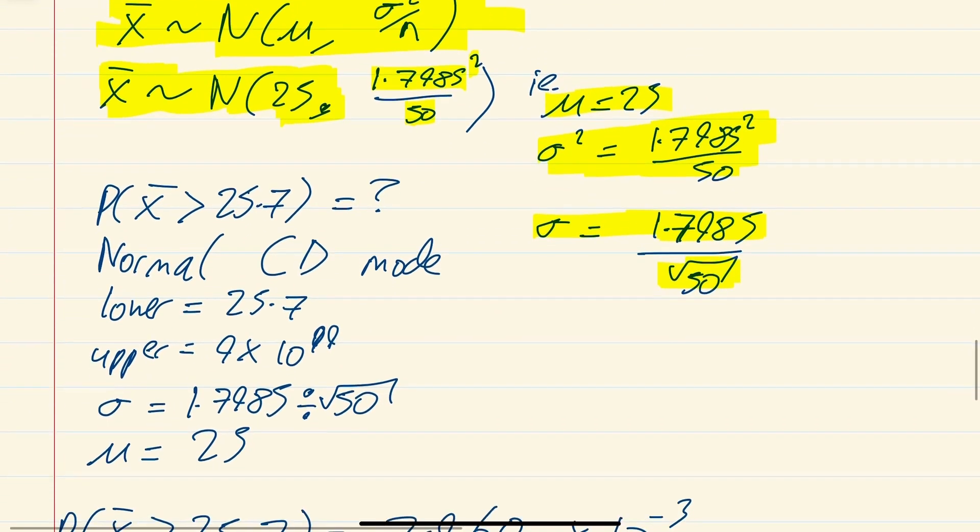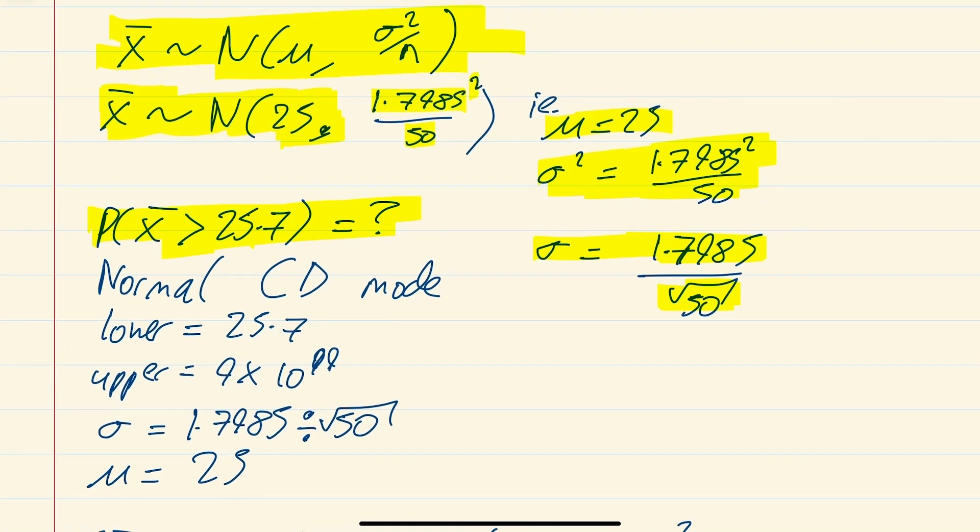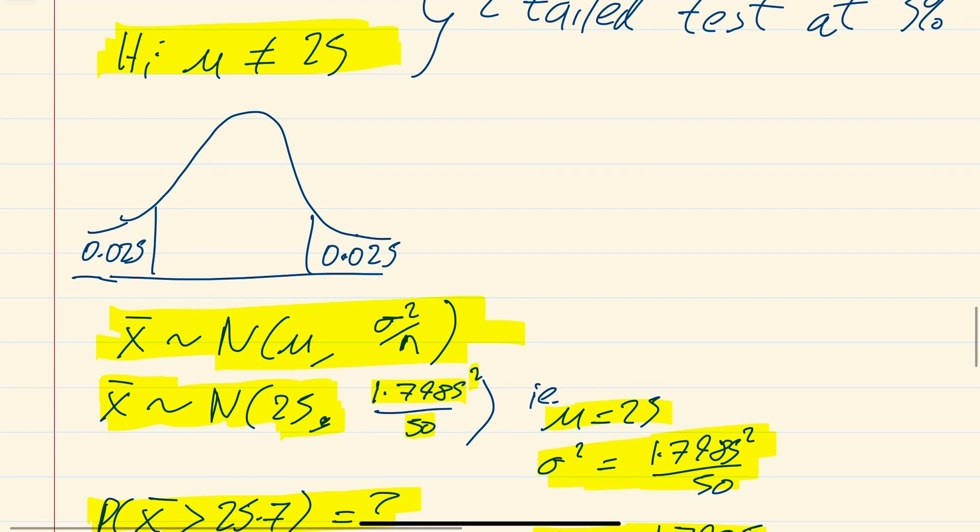What we want to do in this question is we want to see what the probability is, because we're doing X bar is greater than 25.7. Because if you think about what the mean was, the mean was 25. So 25.7 is either going to be here or it's going to be here. And if it's that second one there, if it's in there, then it's in the critical value, then we would know to reject our H0. But we'll just have to wait and see what way this plays out.